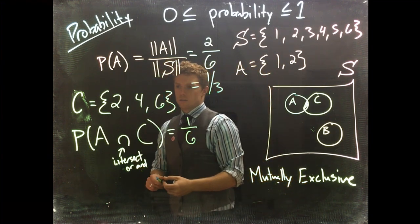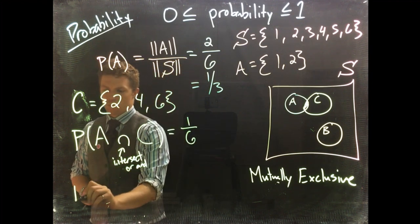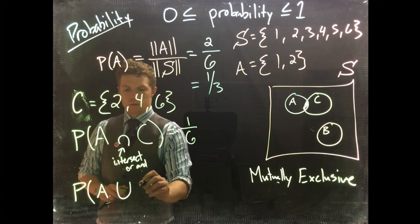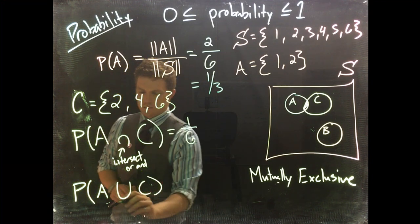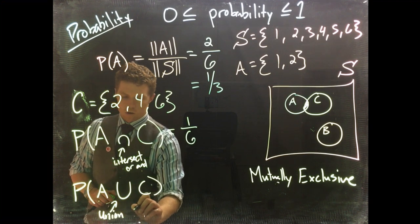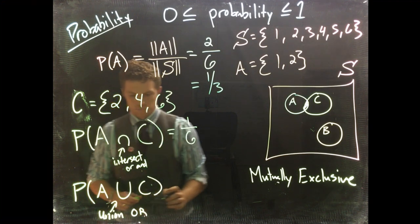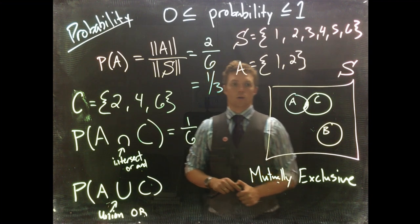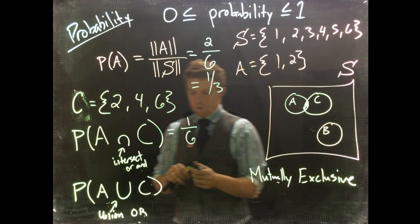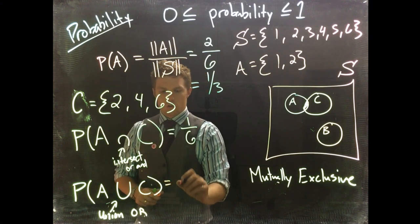Let's do another one. What is the probability of A union C? This is union, or we could think of it as or. Now we want to know what's the probability of being A or C.